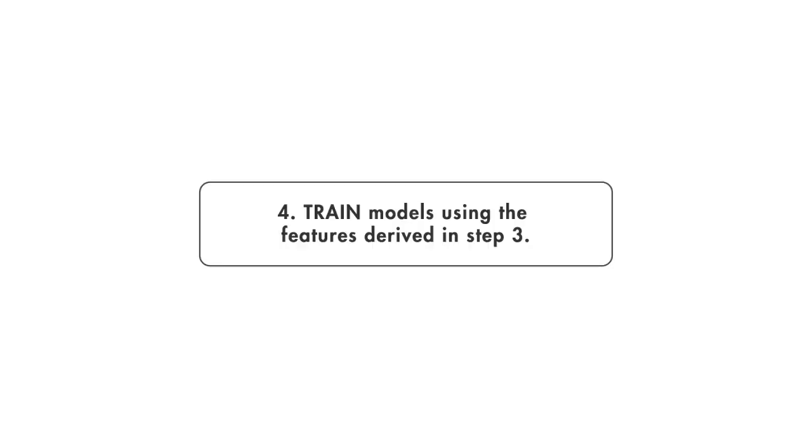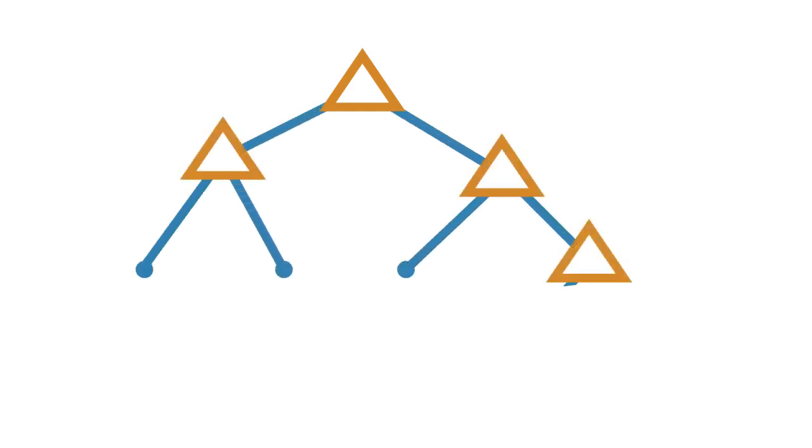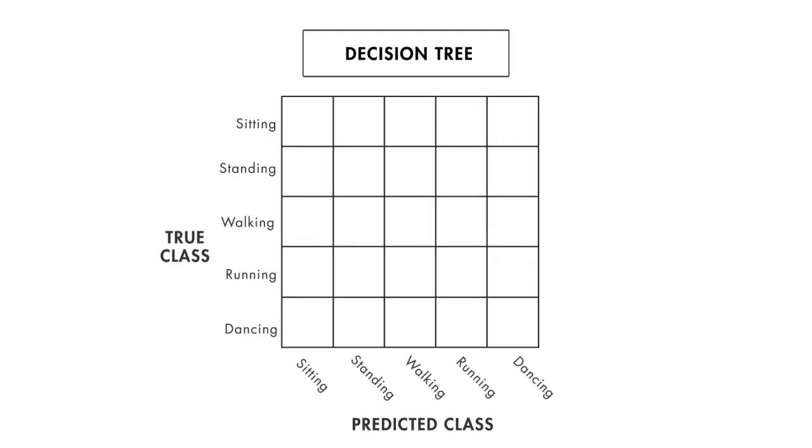Now it's time to build and train the model. It's a good idea to start with something simple, like a basic decision tree. This will run fast and be easy to interpret. To see how well it performs, we look at the confusion matrix, a table that compares the classifications made by the model with the actual class labels.